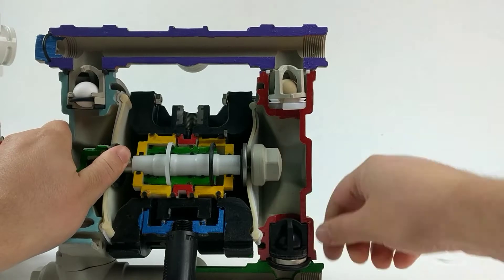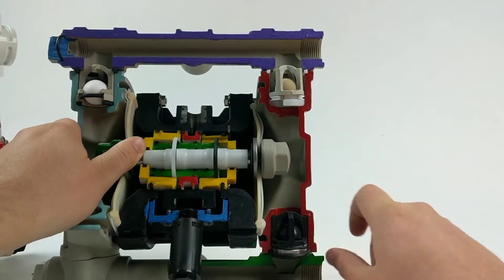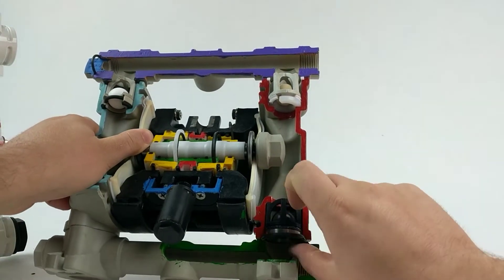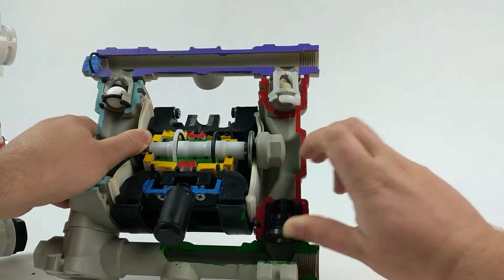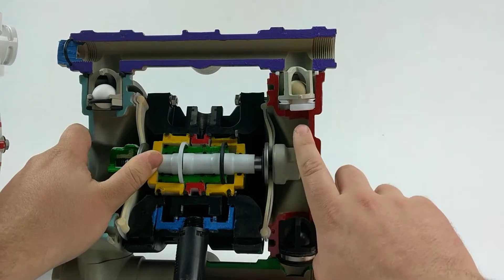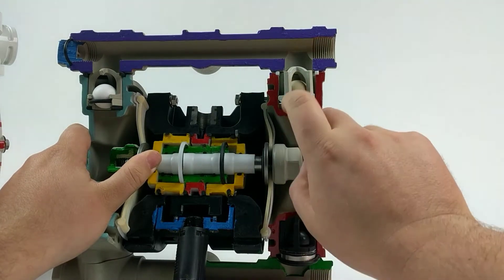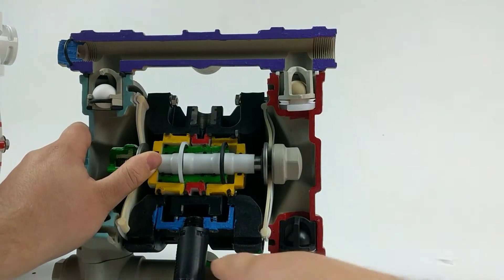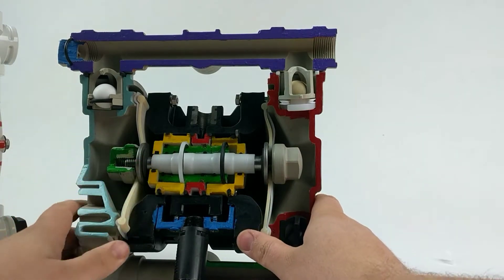When the diaphragm shifts, fluid is sucked in, the ball valve is pushed up, water fills the cavity, when it actuates back, water is forced out the top and out. So in, out, over and over again.